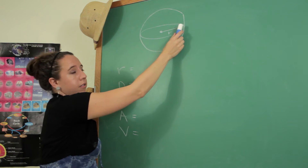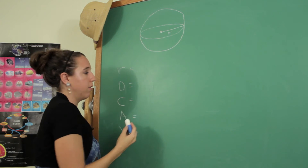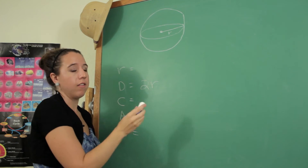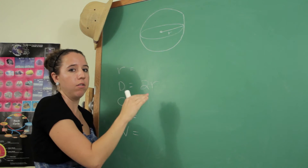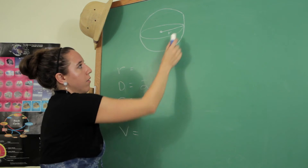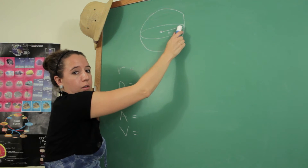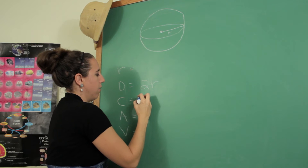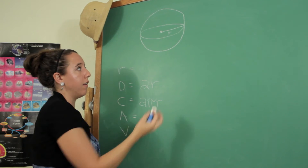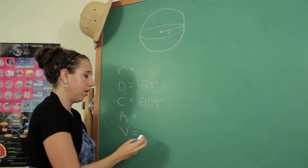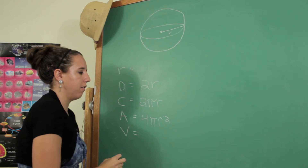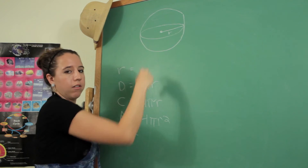D is the diameter — basically the distance across, or twice the radius. C is the circumference, and in this case it would be the circumference of the biggest circle you can make in that sphere, because you can make smaller circles too, but this is the widest one. That is going to be two pi r. The surface area of the outside of the sphere is going to be four pi r squared — essentially four times the area of that circle.